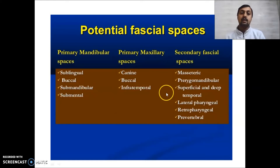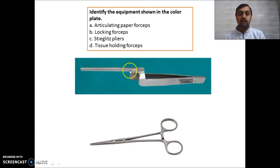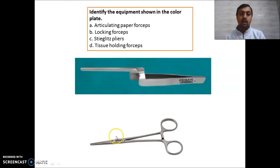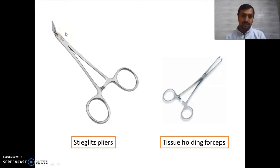Now identify the equipment shown. This is the articulating paper forceps. This is the locking forceps — you can see the locking mechanism at the two areas. This one is the Stieglitz pliers, used for holding silver points. And this is the tissue-holding forceps.